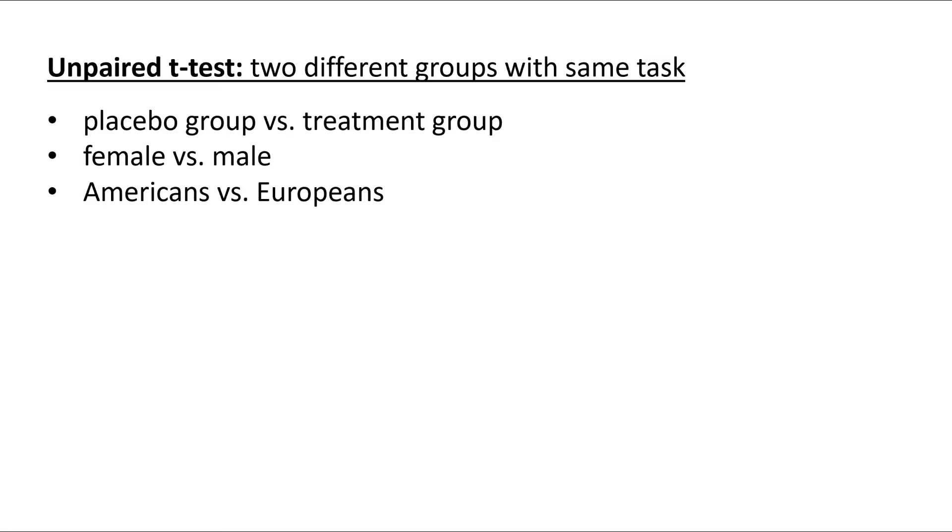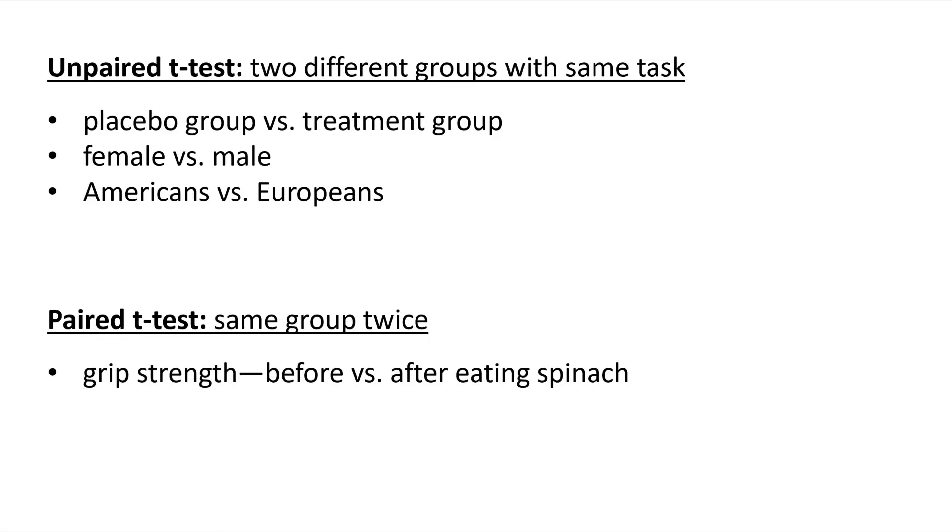On the other hand, maybe you need a paired t-test. That's what you would use if you tested the same group two different times. For example, maybe you were testing grip strength. You gave people the test before they had spinach, and then the same people tried again after they had eaten some spinach. The point is, it's the same group of people.